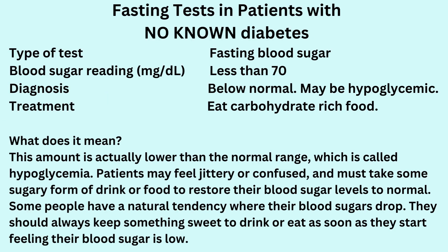If the blood test you had was a fasting blood sugar and you got a reading below 70 milligrams per deciliter, then your blood sugar level is considered below normal. Patients with low blood sugar are called hypoglycemics. When blood sugar is low, patients may feel jittery or confused and must take some sugary form of drink or food to restore their blood sugar levels. Some people have a natural tendency where their blood sugars drop and should always keep something sweet to drink or eat.